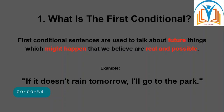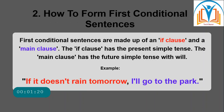First conditional sentences are used to talk about future things which might happen, that we believe are real and possible. For example: 'If it doesn't rain tomorrow, I will go to the park.'